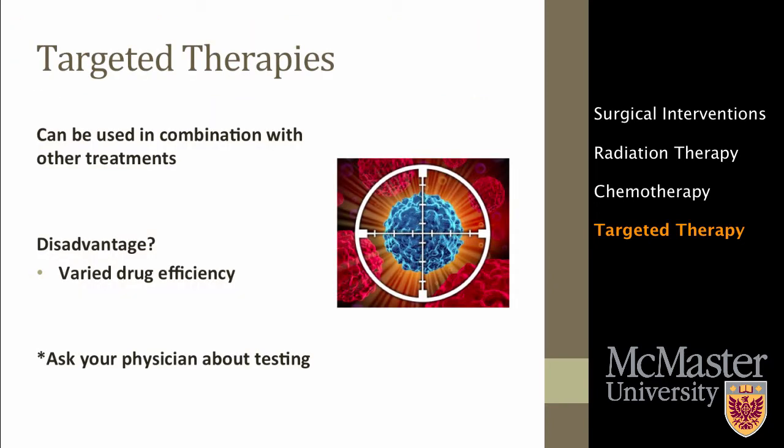Targeted therapies can be used in conjunction with other forms of treatment. It is the desired treatment for advanced stages of cancer because it is systematic, yet unlike chemotherapy and radiation, it does not harm the normal cells of the body. Unfortunately, the sensitivity of treatment varies based on the presence of a specific mutation, which may not be common amongst patients. Given that tumors vary from patient to patient, mutations can be typed and matched with a specific drug. This test can be requested by your physician.